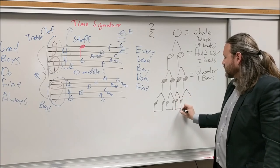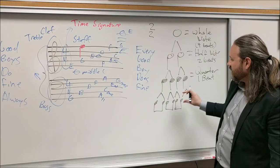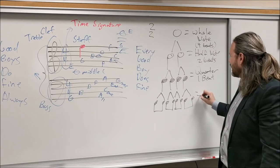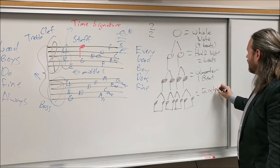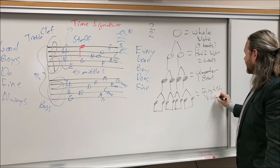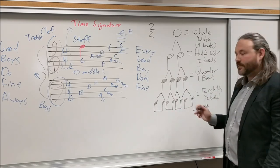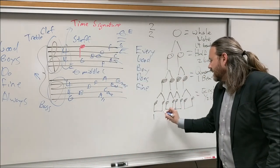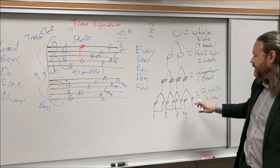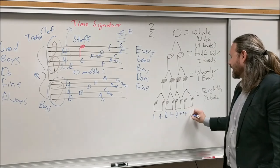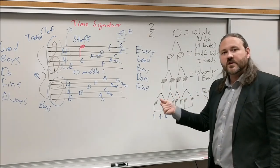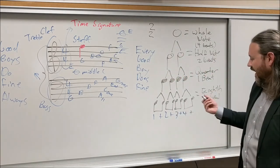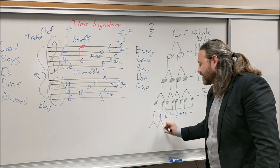You create eighth notes by taking two quarter notes and drawing a beam connecting them. An eighth note is worth half a beat. Two eighth notes fit per beat, and we count them as 'one-and, two-and, three-and, four-and' — using 'and' as the syllable between beats. You can continue dividing eighth notes further.